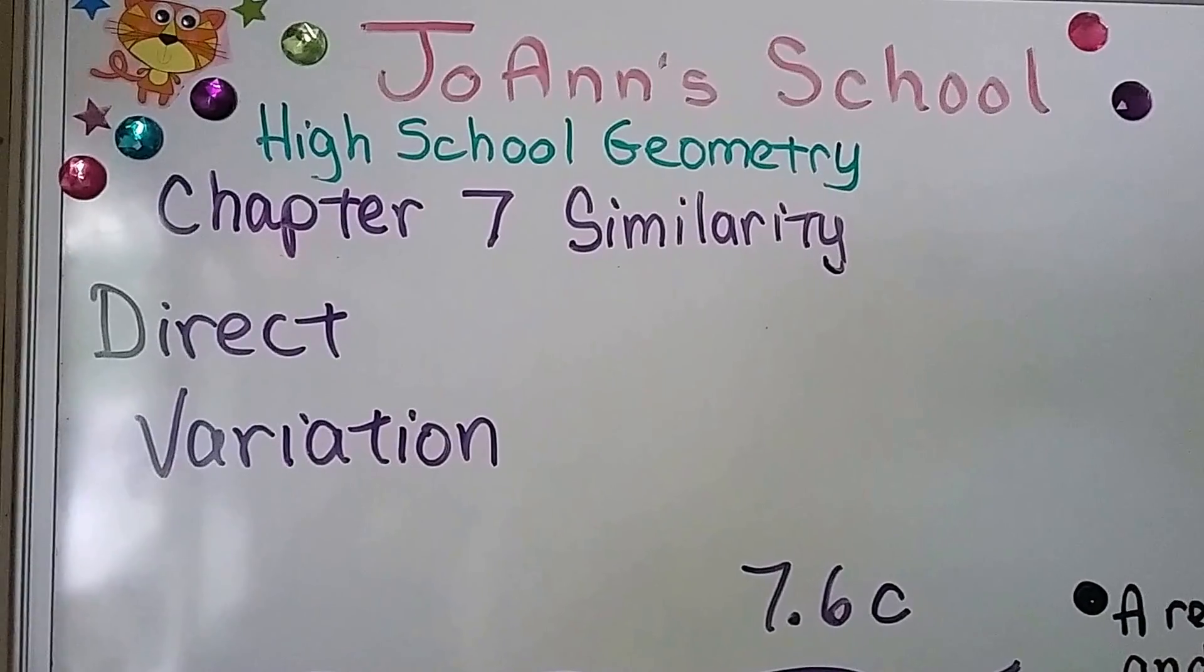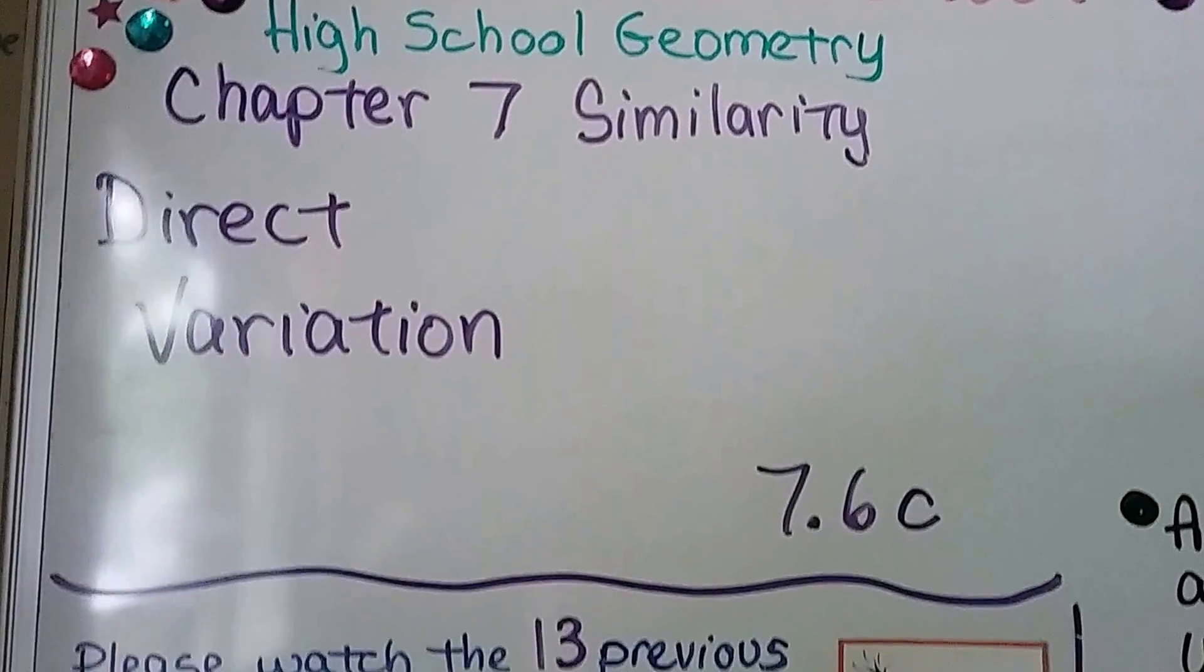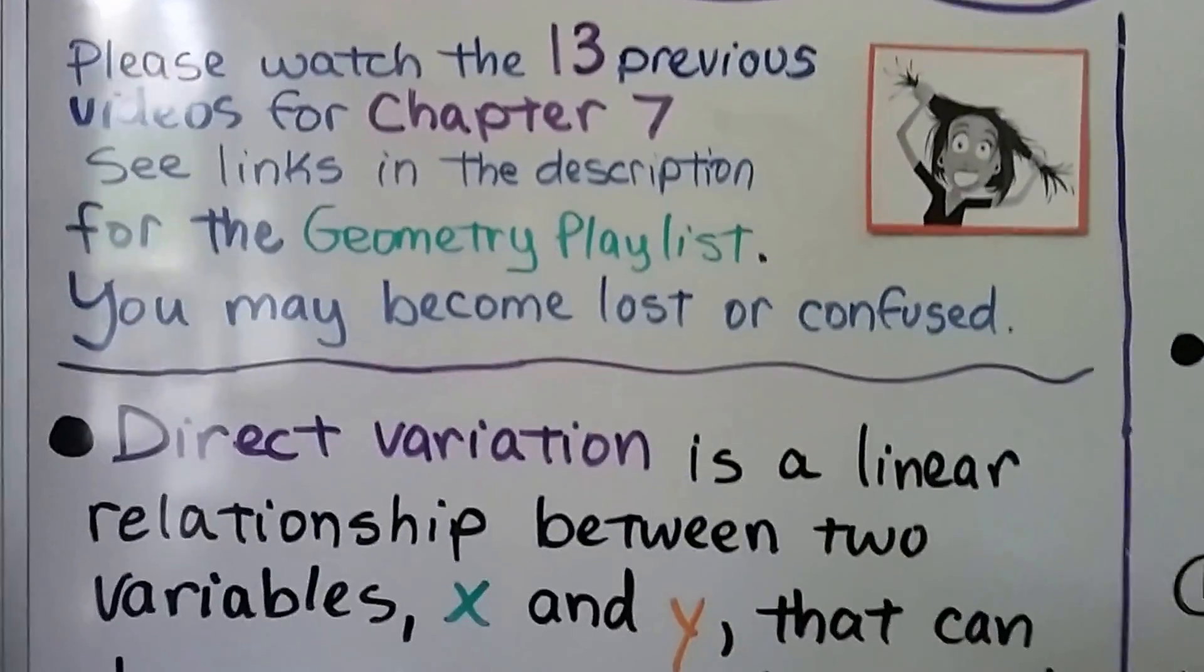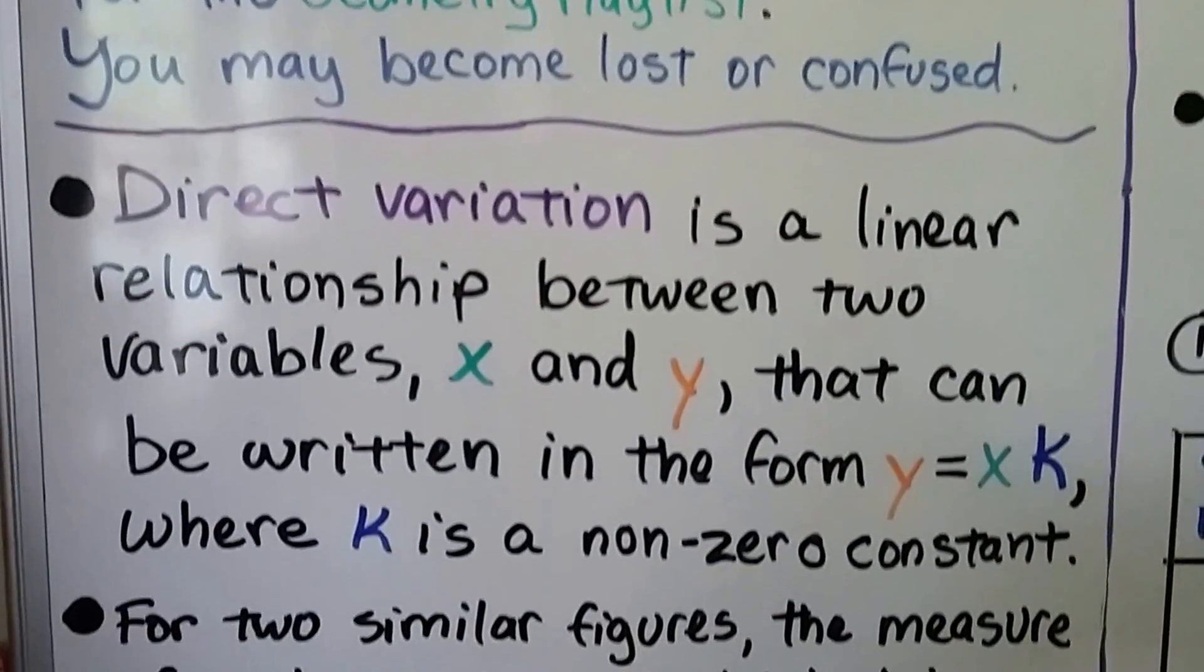Direct variation, 7.6c. This is the third part of our lesson of 7.6. We have 13 previous videos for chapter 7 that are linked in the geometry playlist if you need them.